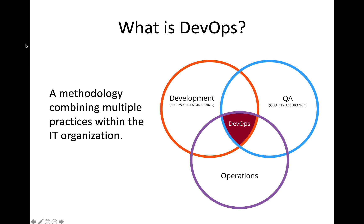Now, that's not to say that DevOps is itself yet another team, another silo within the organization. What it means is that each of these teams — the development, the operations, the quality assurance team — are really working together. They're collaborating together to drive the increase in service velocity and quality.